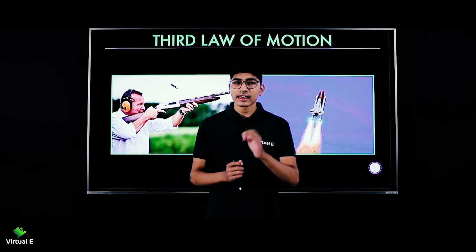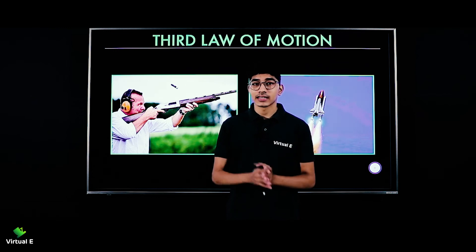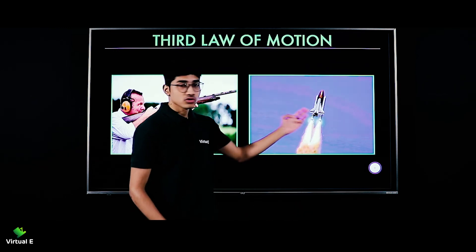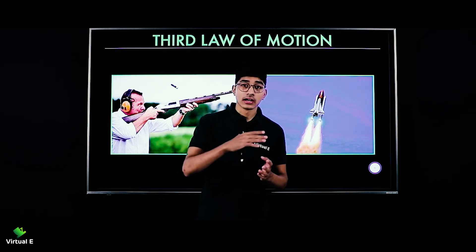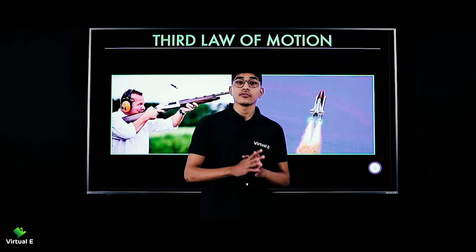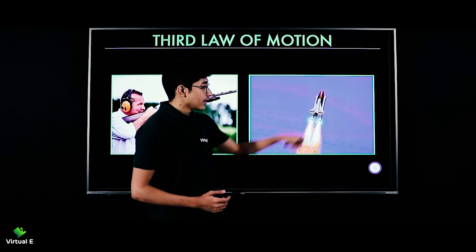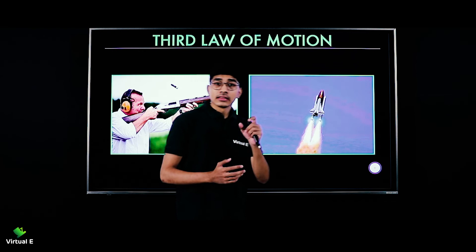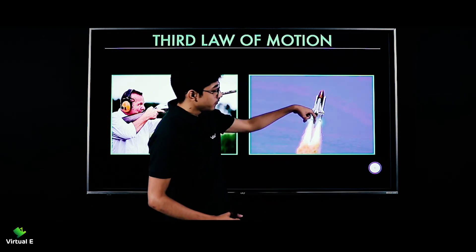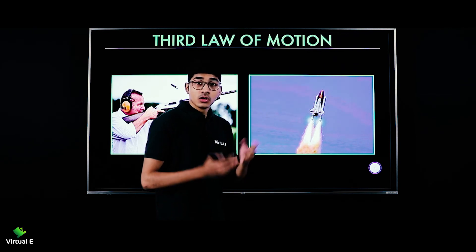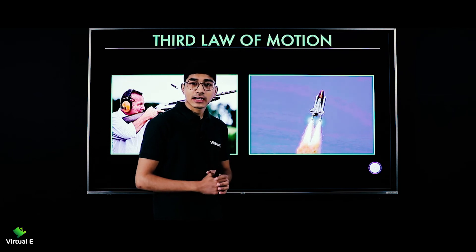Next we have rocket propulsion. In a rocket, we have hydrogen fuel — the same thing happening as in the gun, but on a much larger scale. Due to the hydrogen fuel, an explosion occurs, and the force is applied on the rocket's side. When the explosion happens, the hydrogen fuel gas is exerted downward out of the rocket. So the fuel pushes downward, and in reaction, that same force is applied upward on the rocket, and the rocket gets lifted off.